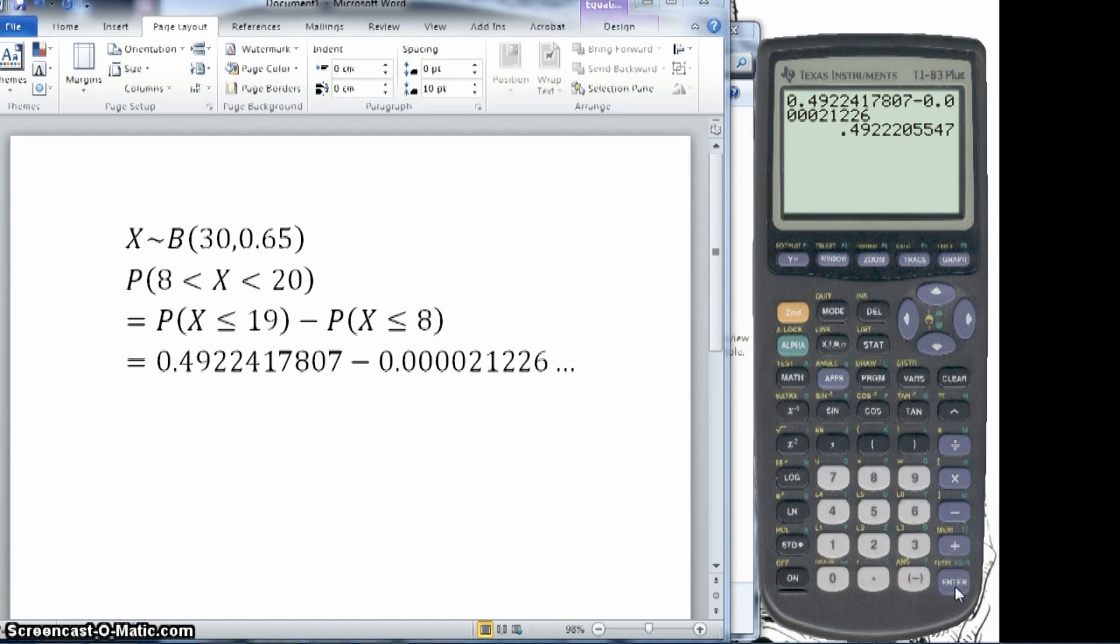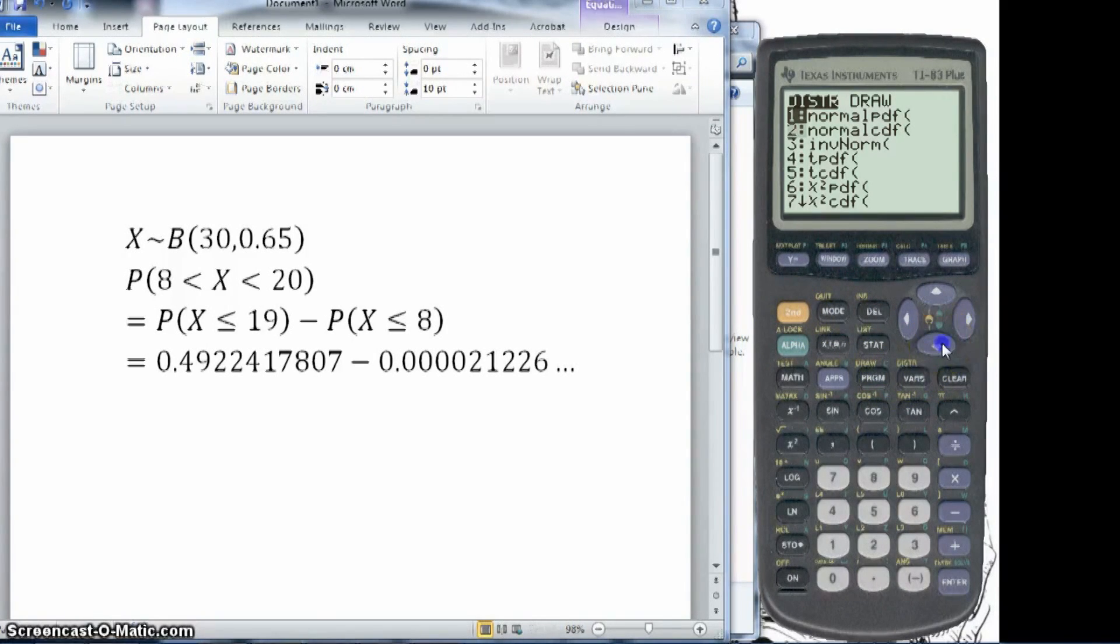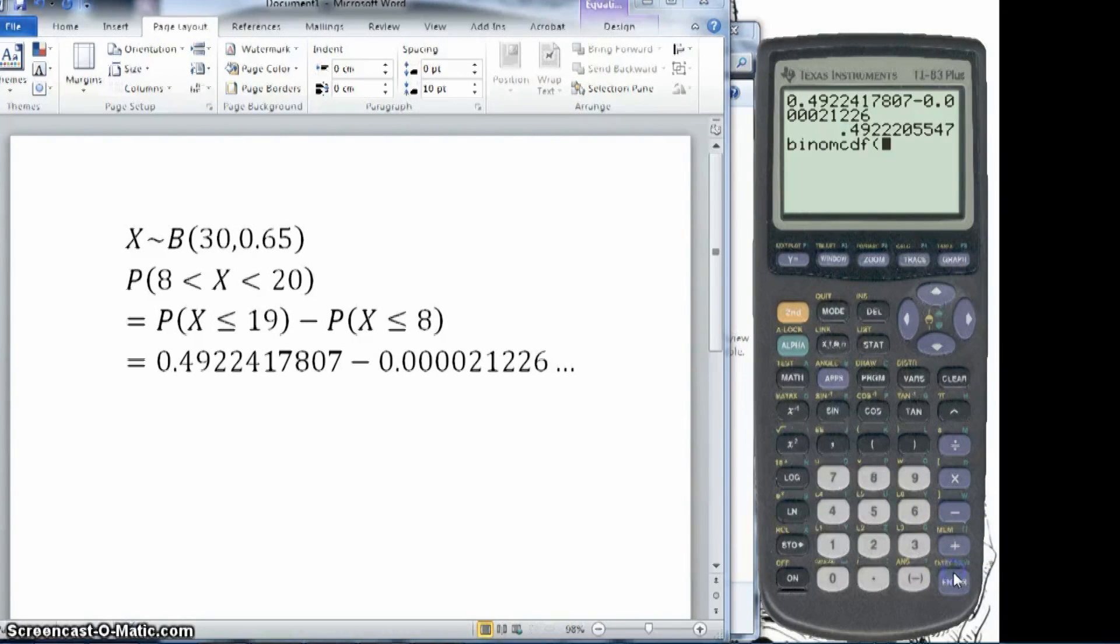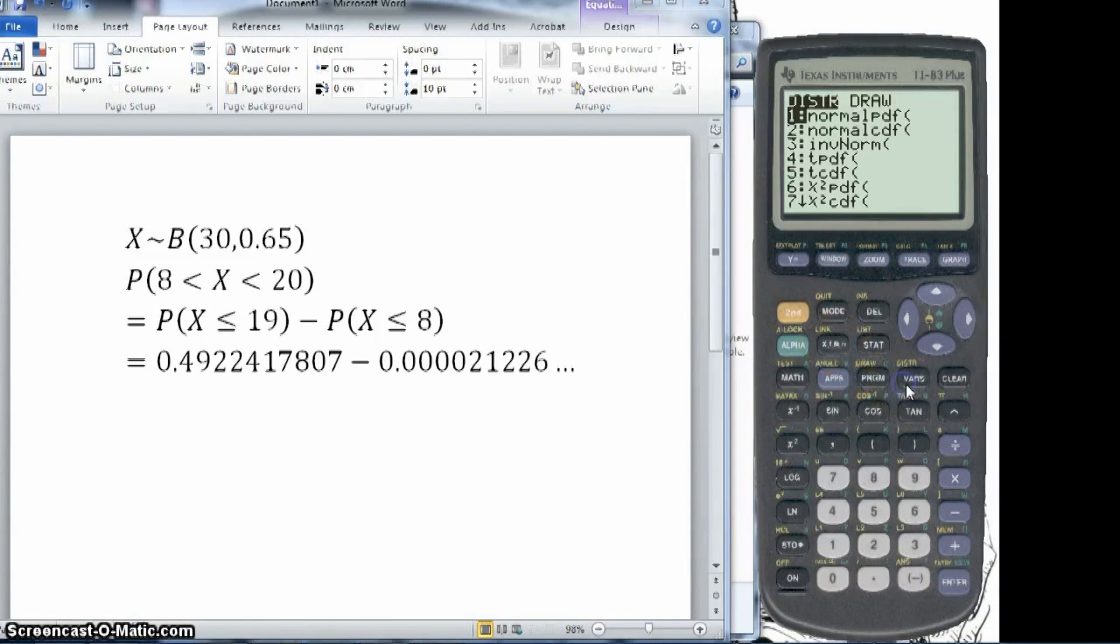If you wanted to do this in one go, then you can go to the 2nd, then VARS, down to binom CDF again. And then you can do 30, 0.65, 19. Close the bracket. Then take away, and do the same thing, binom CDF. This saves you having to type in the values, the long numbers.